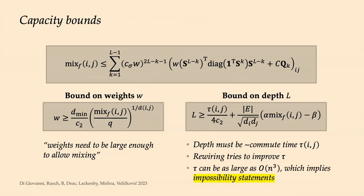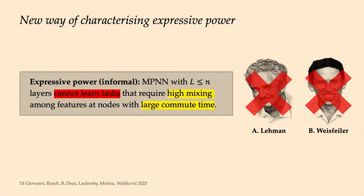Because the commute time can be as large as the cube of the number of nodes, we get impossibility statements: an MPNN with a certain number of layers cannot learn tasks requiring high mixing among nodes separated by large commute time. This gives us two things: whether a given architecture can express certain functions, and how to modify the graph to improve the mixing the neural network can implement.